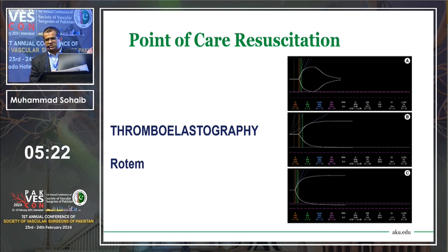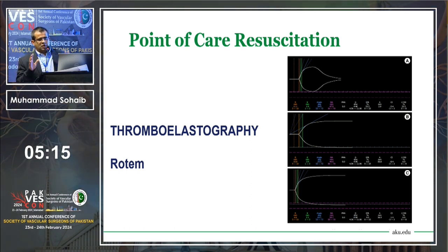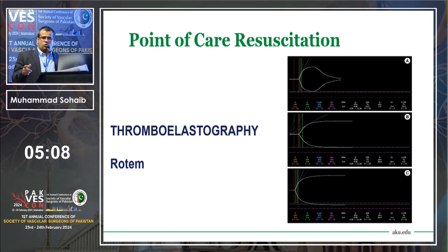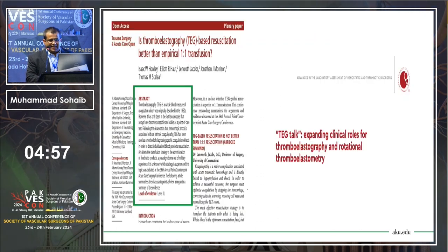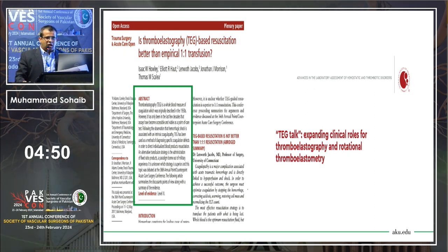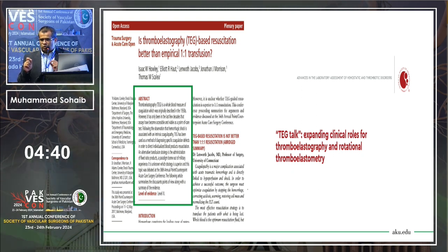The other approach is point-of-care resuscitation using thromboelastography (TEG) or ROTEM. Is 1:1:1 superior or is ROTEM/TEG better? Studies did not show a significant difference. If using 1:1:1 — rapid diagnosis, go straight to blood products, limit crystalloid — you do not necessarily need ROTEM. Although studies show ROTEM and TEG have limited blood product use, the difference in morbidity and mortality is not very significant.